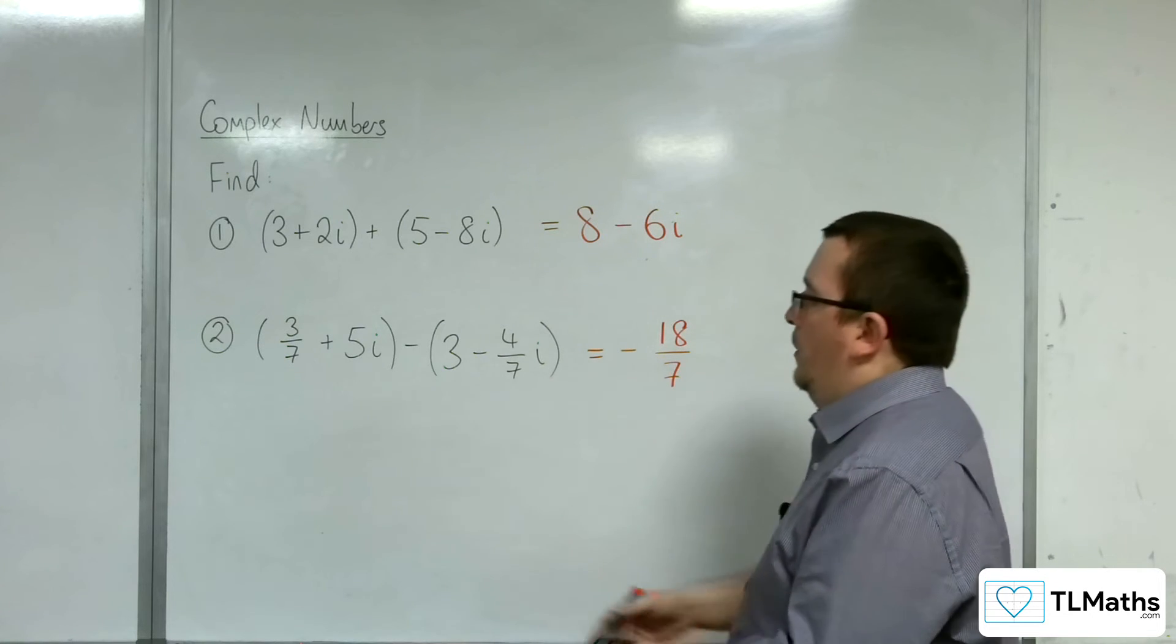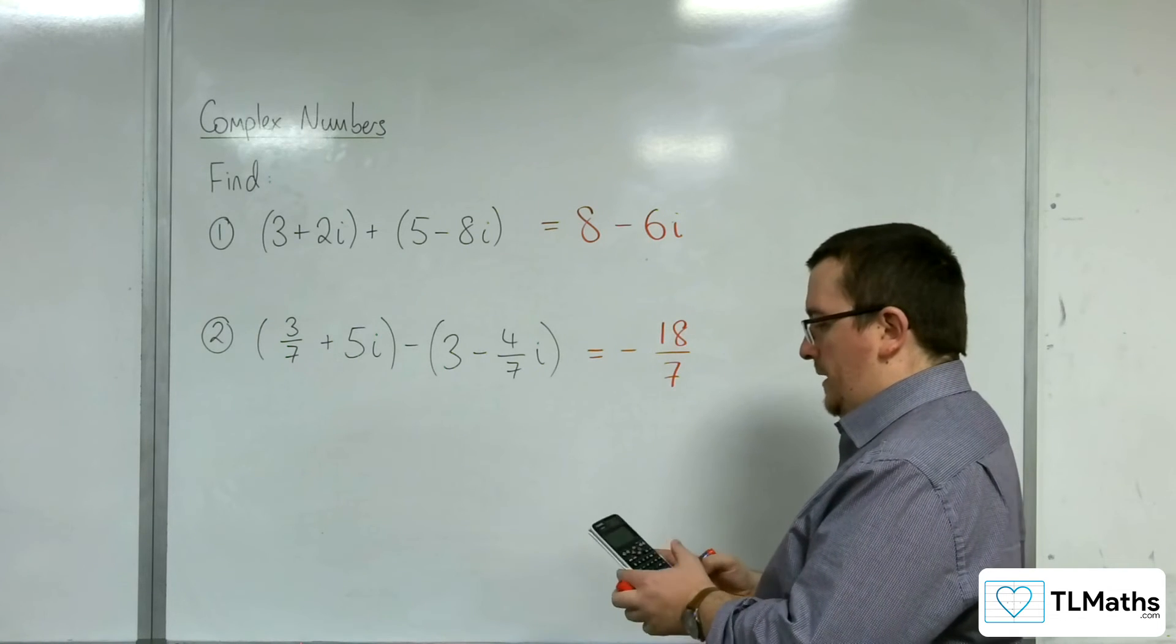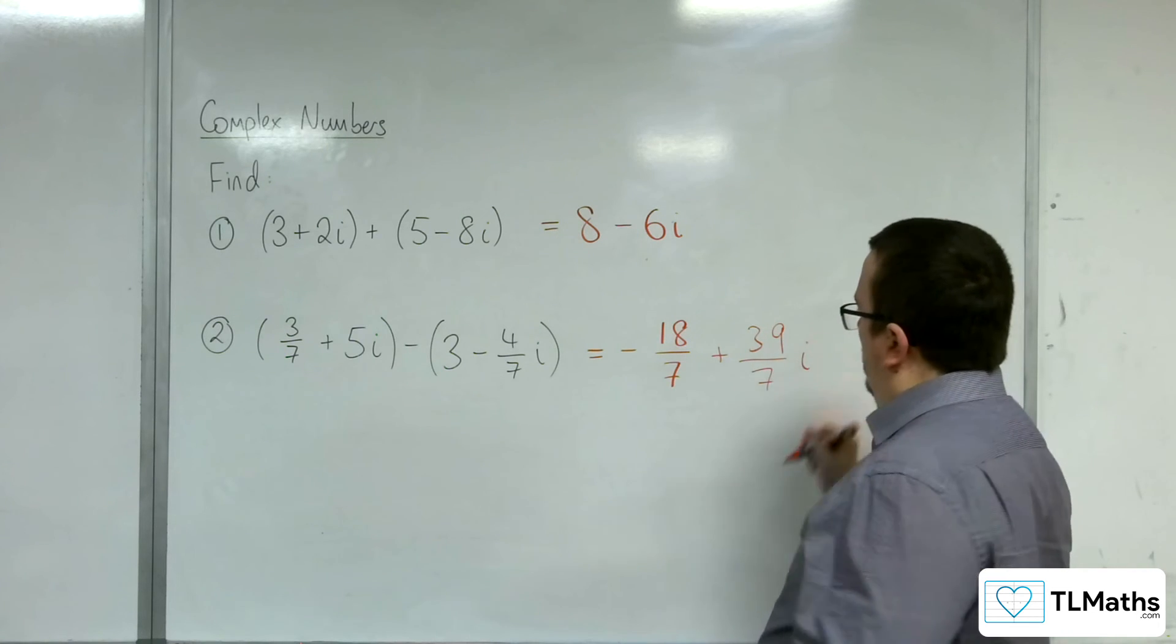And then we've got 5i plus 4/7i. So 5 plus 4/7 is 39/7, so 39/7i.